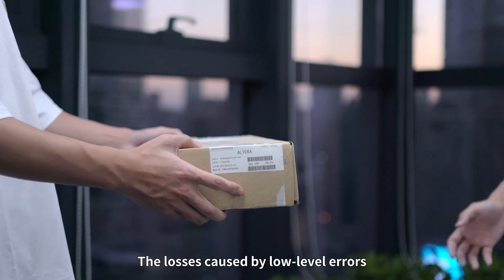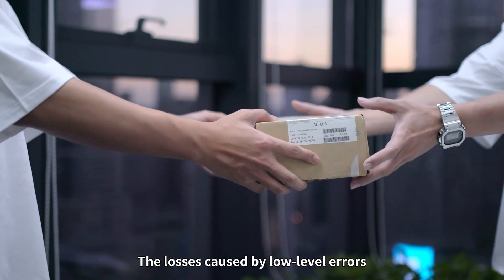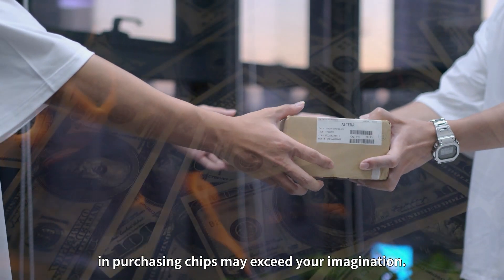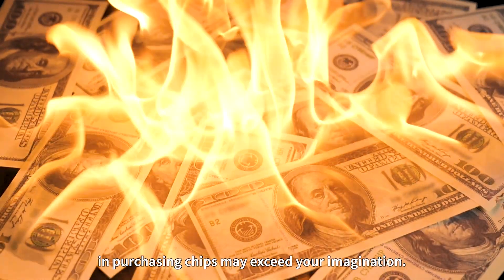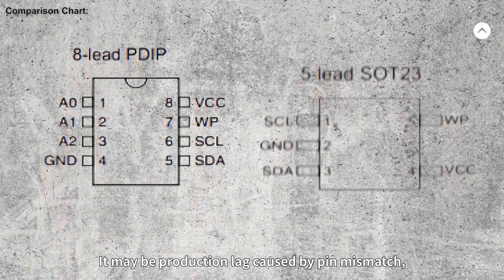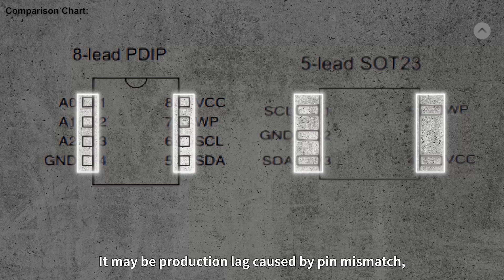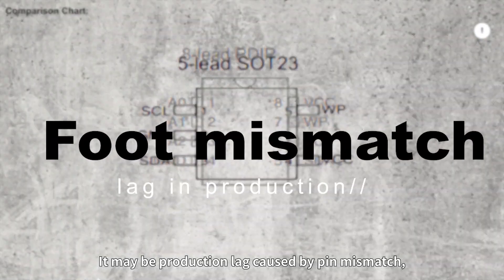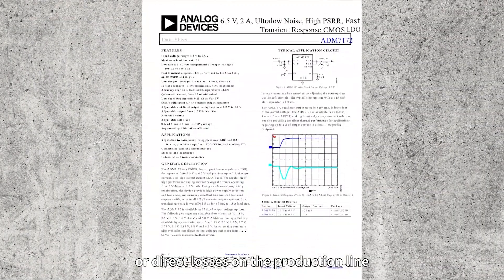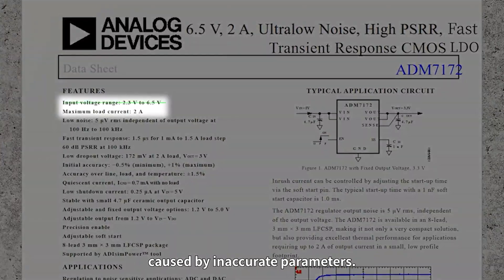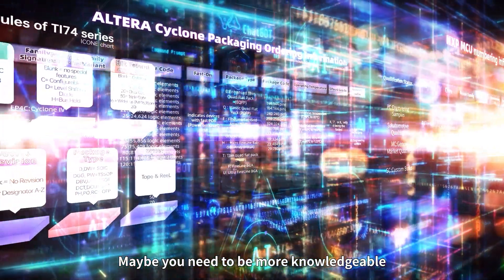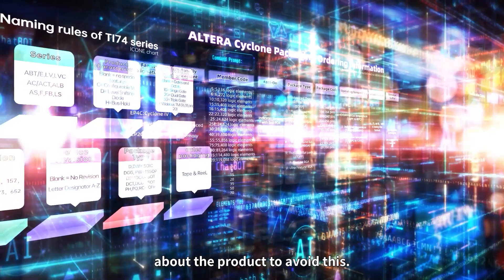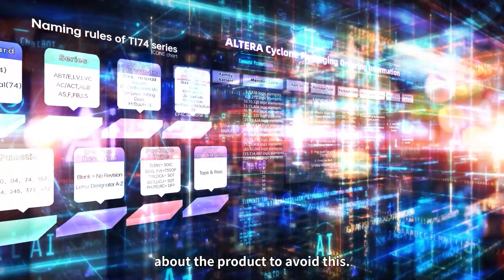The losses caused by low-level errors in purchasing chips may exist in ways you haven't imagined. It may be production loss caused by pin mismatch, or direct losses on the production line caused by wrong parameters. You may need to be more knowledgeable about the process to avoid this.